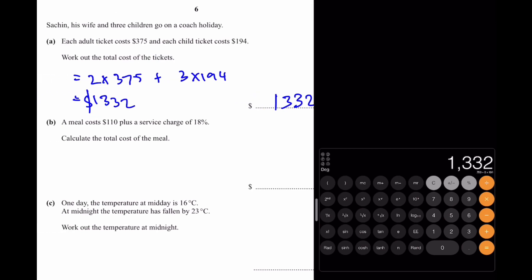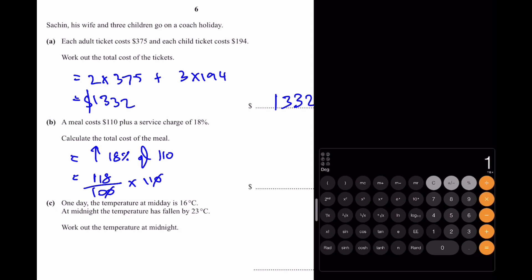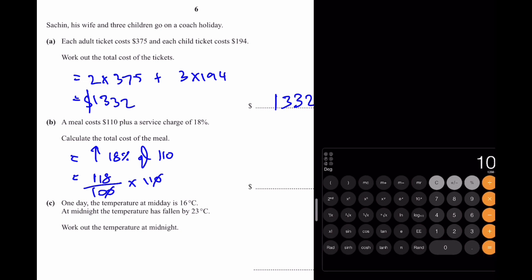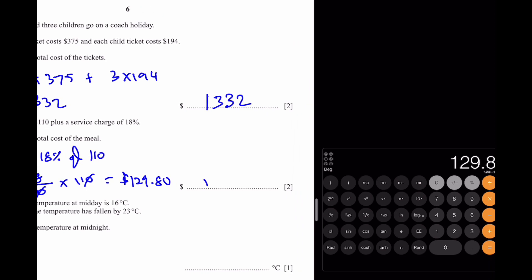Part B: A meal costs $110 plus a service charge of 18%. Calculate the total cost. That's 118/100 × 110, giving a total of $129.80.